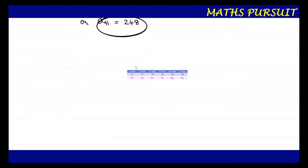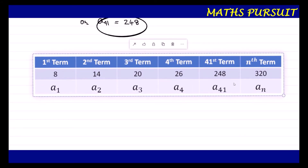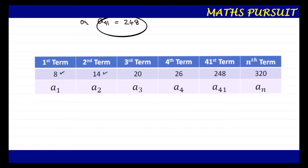Looking at the table again: given terms are 8, 14, 20, 26, and the 41st term we found is 248. The question is asking which term it will be if we add 72 to the 41st term. So 248 + 72 = 320. We need to find which term has the value 320 — that value of n is what we need to determine.